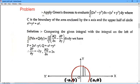The problem is: apply Green's theorem to evaluate integral over C of (2x² - y²)dx + (x² + y²)dy.